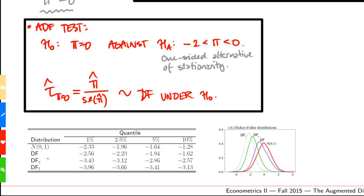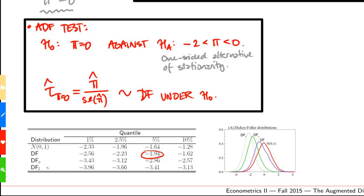We have the quantiles of the various distributions. Note that we do a one-sided test, so the Dickey-Fuller distribution has a 5% critical value of minus 1.94. Note the change here if we include a constant and if we include a trend as well.